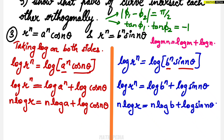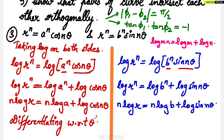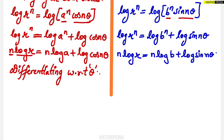After simplification we go to the next step, which is differentiating with respect to θ. For n log r: n is a constant, so differentiating log r gives 1/r, and since we differentiate with respect to θ (not r), we write (n/r)(dr/dθ). Note that differentiation of log x is 1/x with respect to x; here it is with respect to θ, so chain rule applies. On the right side, n log a: n is constant, a is constant.